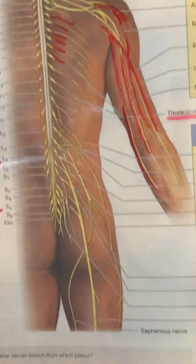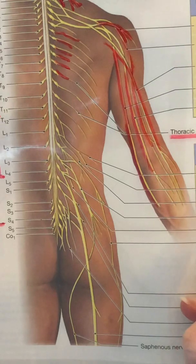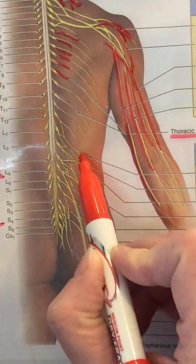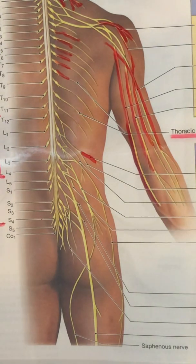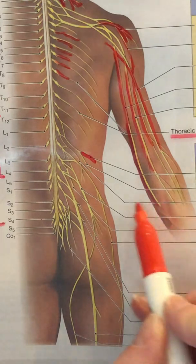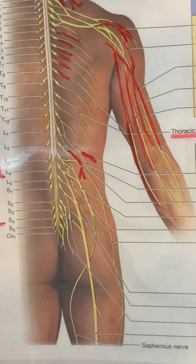As we move down here, iliohypogastric is our first nerve here in this lumbar plexus, it's this guy right here, just a little branch off of that plexus. Genitofemoral is right here, kind of curves around and does a little branch there.